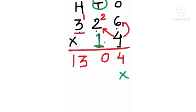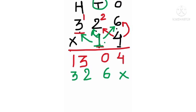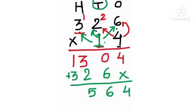Start multiplying 1 with 6 — 1 six is 6. Now 1 two is 2, and 1 three is 3. Now add the numbers: 4 plus 0 is 4, 0 plus 6 is 6, 3 plus 2 is 5, and 3 plus 1 is 4.